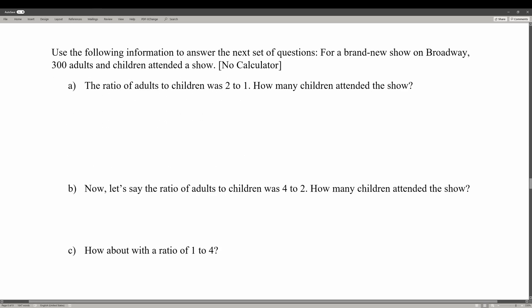For a brand new show on Broadway, 300 adults and children attended a show. The ratio of adults to children was 2 to 1. How many children attended the show? In this case, what we're trying to find is the number of children, and we could use x to represent that. We also know that the number of adults that attended the show was 2 times greater than the number of children, so that can be represented with 2x.